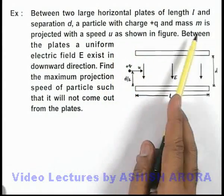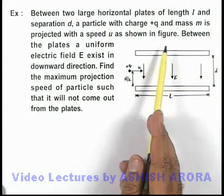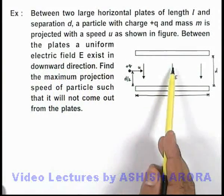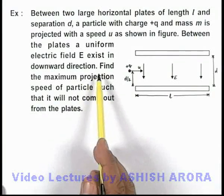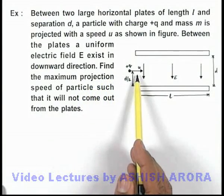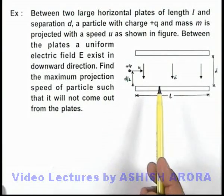A particle with charge +q and mass m is projected with speed u as shown in the figure. Between the plates, a uniform electric field E exists in the downward direction. We are required to find the maximum projection speed of the particle such that it will not come out from the plates.